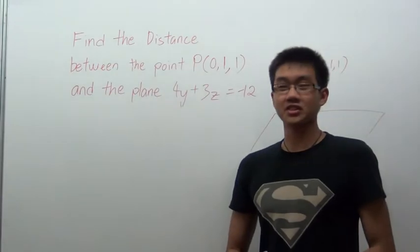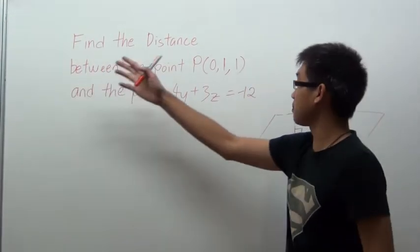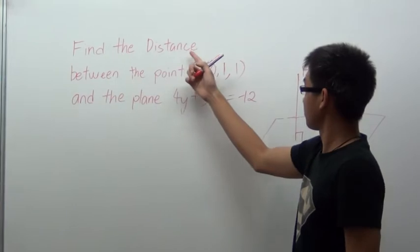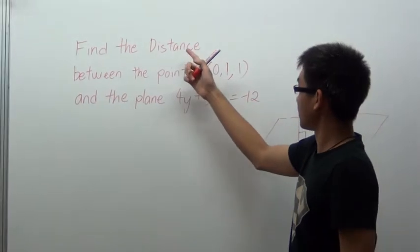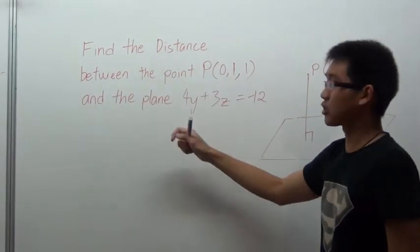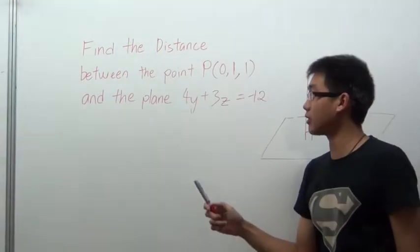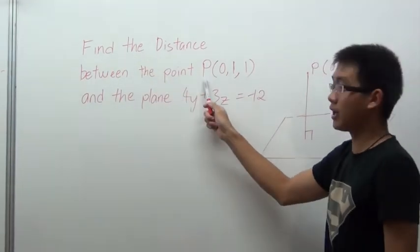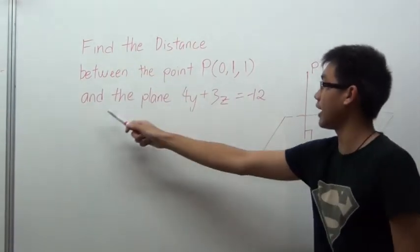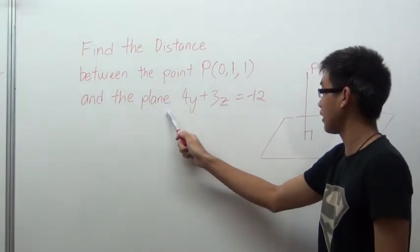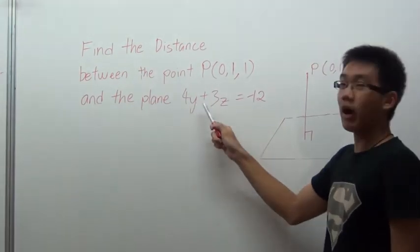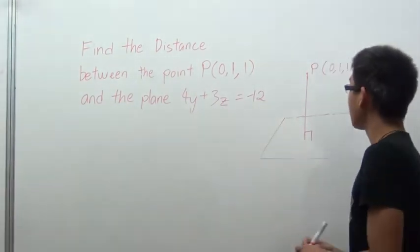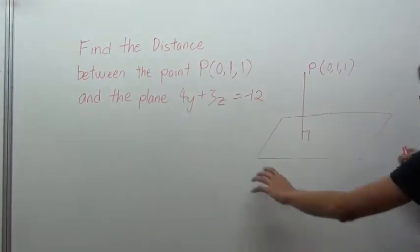Hi, I'm Jason. After Jeremy has explained the concept of finding the distance between the point and the plane, let's try an example. How do we find the distance between point P, which is (0, 1, 1), and the plane 4y + 3z = -12? First, you have to draw the plane.